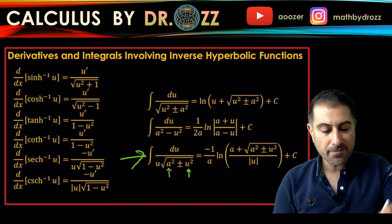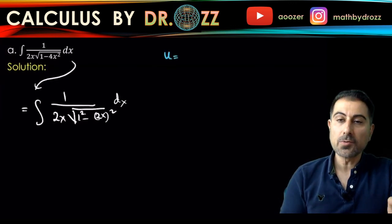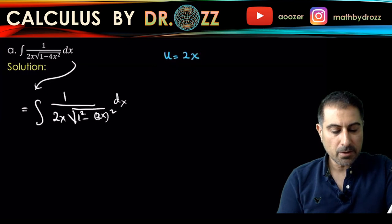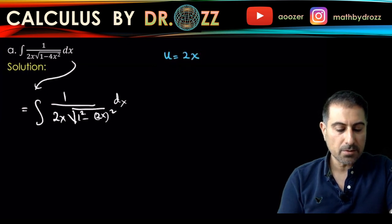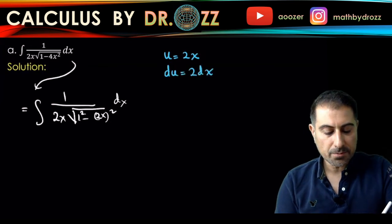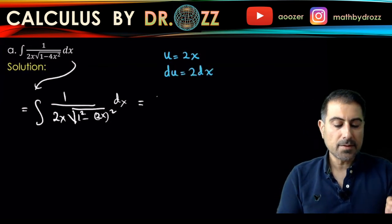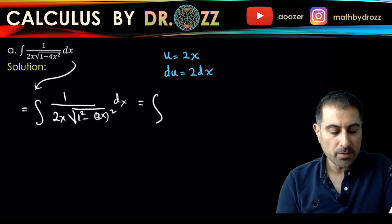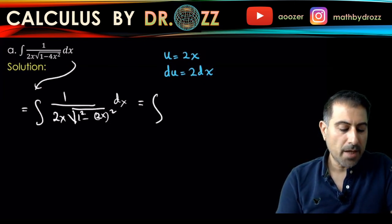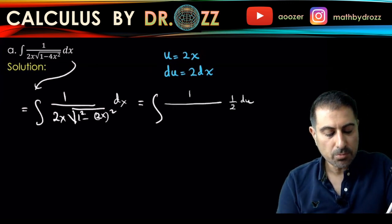So to achieve that first, we have to have a u substitution to start with. U equals 2x, and we are going to look at du, that is 2dx. So now I'm going to rewrite this in terms of the new variable. So dx is one half du. So you have 1 over one half du, and 2x is already u.